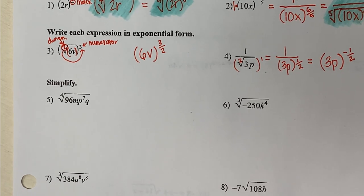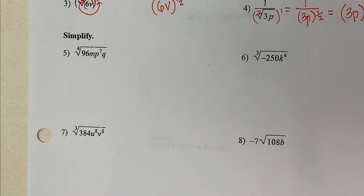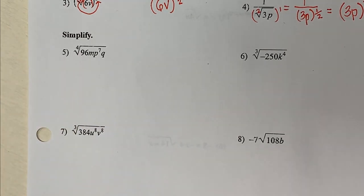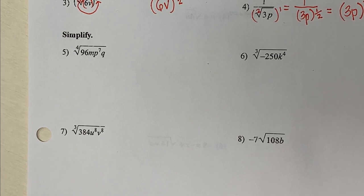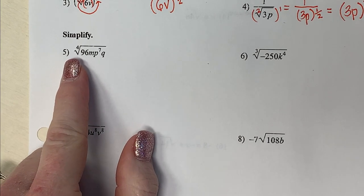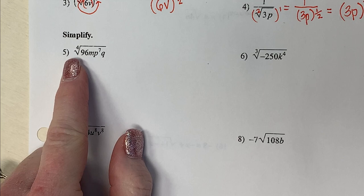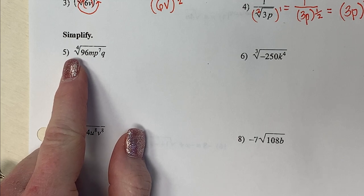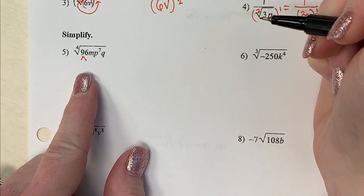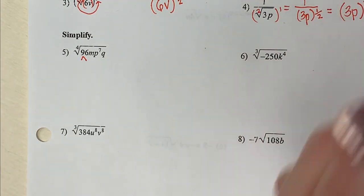Questions 5 through 8, the directions say simplify. I want to break everything underneath my radical down as much as possible — you'll probably want your calculators. The index tells me how many things I need to group together to remove one. I'll start with the number 96. Give me two numbers that divide into 96 — 6 and 16 works. Then 6 breaks into 2 and 3, and 16 breaks into 4 and 4, and both 4s break into 2s.